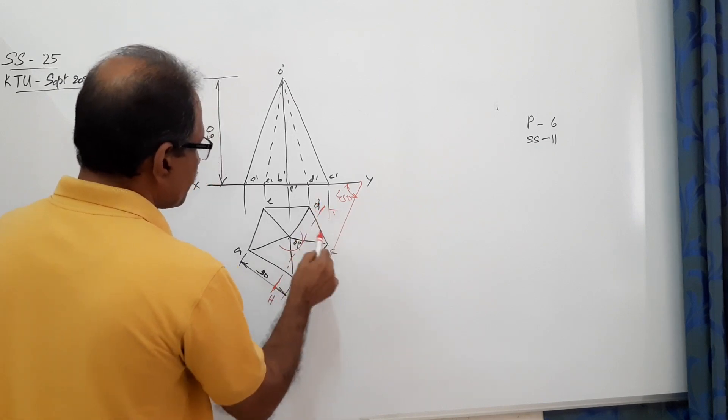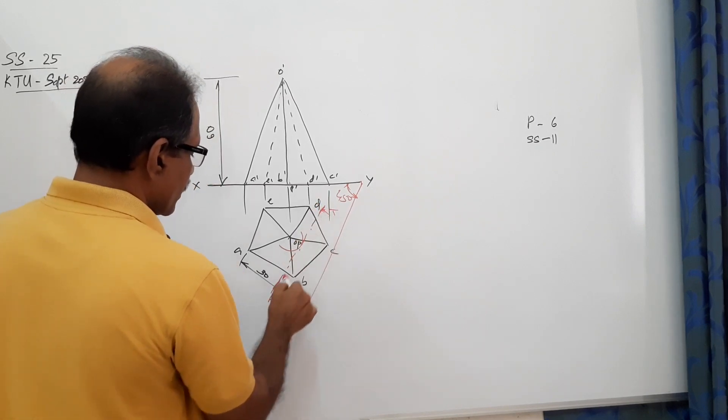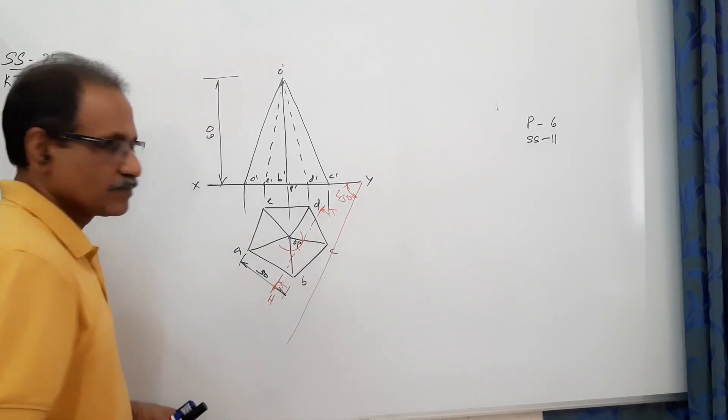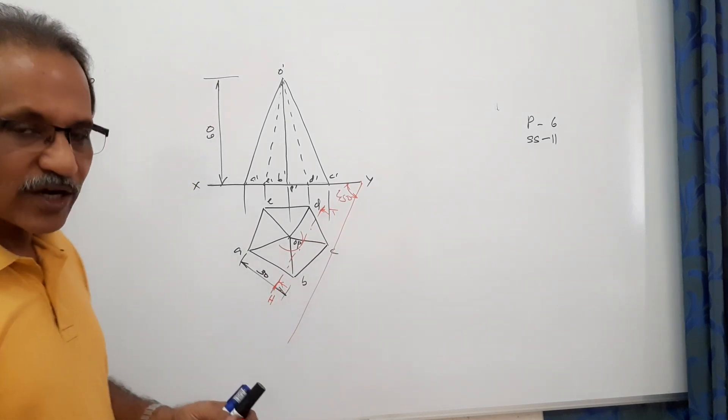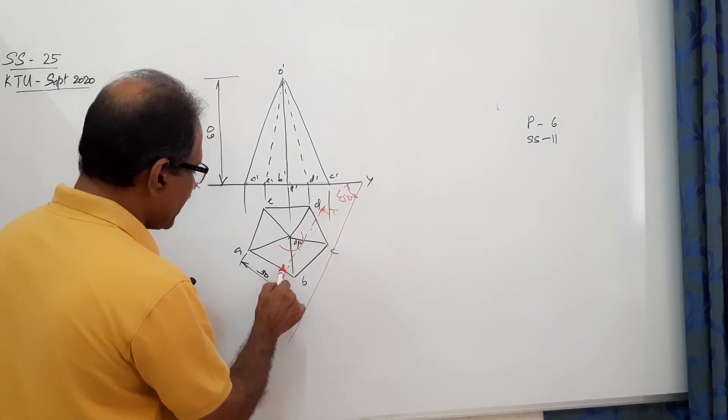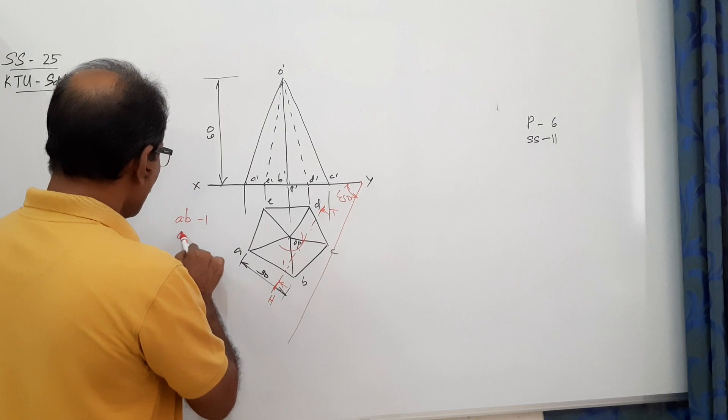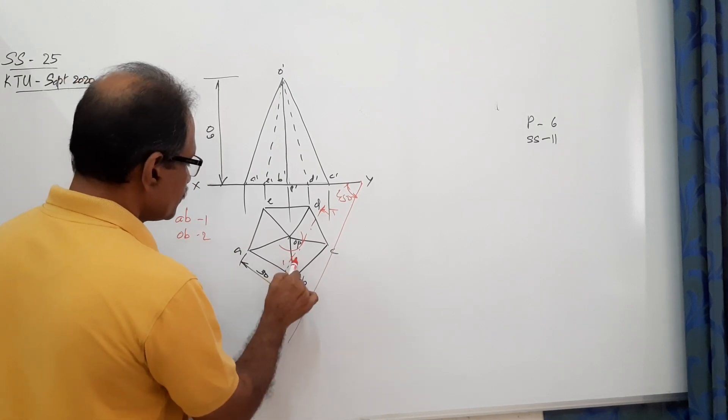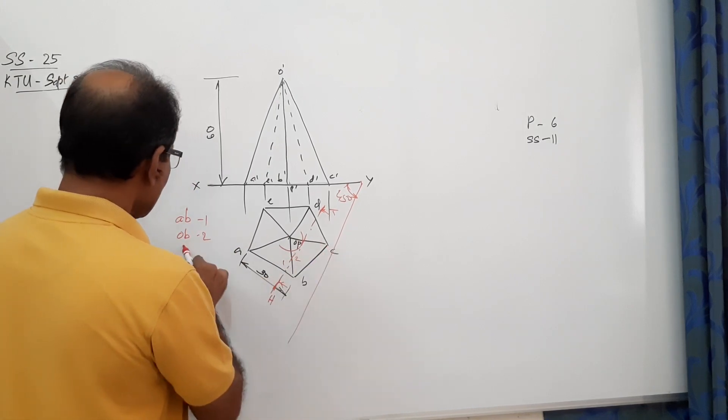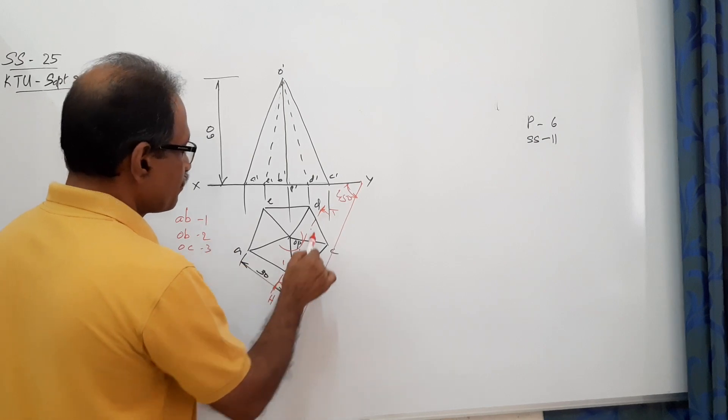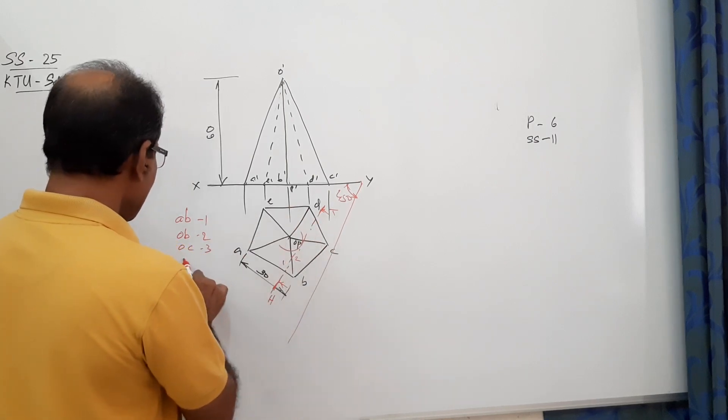HD. Agreed? Where all does it cut? It cut the base AB at 1, OB at 2, OC at 3, and CD at 4.